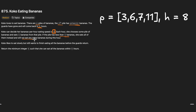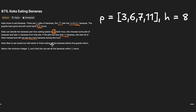If the pile has less than k bananas, she eats all of them instead and will not eat more bananas during this hour. For example, if k equals five or six and we pick the first pile of three bananas, we eat three and wait for the hour to end before moving to the next pile. We need to return the minimum integer k such that she can eat all the bananas within h hours.